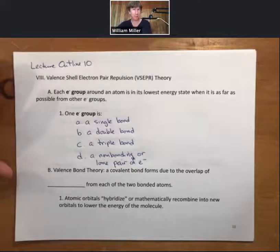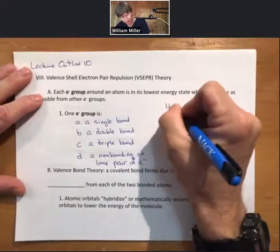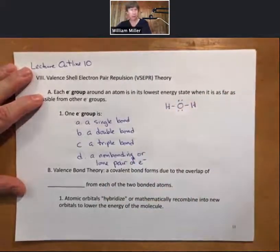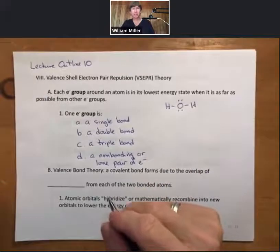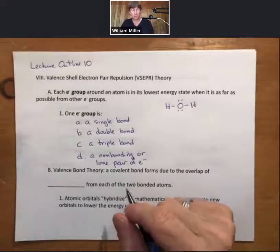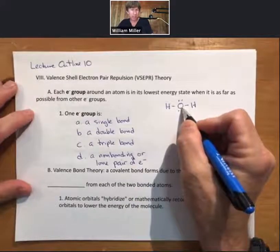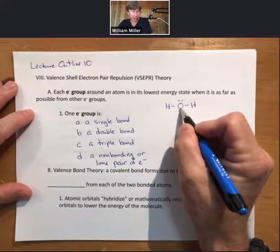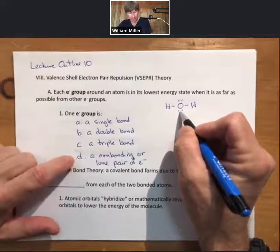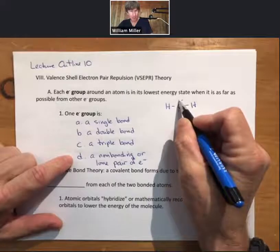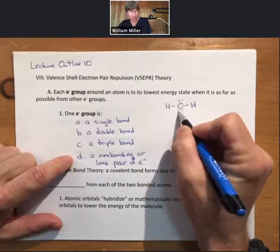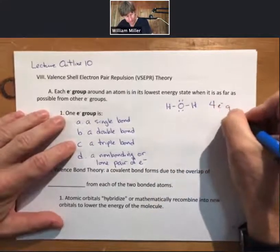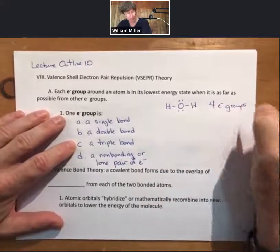A couple of examples to give you an idea about how these electron groups work. Let's look at the Lewis structure for water, H2O. We'll be doing electron groups around only central atoms because they're going to help us determine the shape around those atoms. For oxygen, there is a non-bonding or lone pair, another non-bonding or lone pair — so that's two electron groups — three electron groups for this single bond, four electron groups around oxygen.